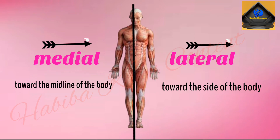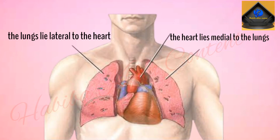Medial and lateral are another set of directional terms. Medial means toward the midline of the body, and lateral means toward the side of the body or away from the midline of the body, where the midline is an imaginary line that divides the body into left and right halves. So we would say the heart lies medial to the lungs, or you could say the lungs lie lateral to the heart.